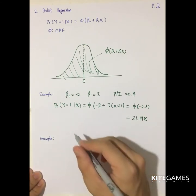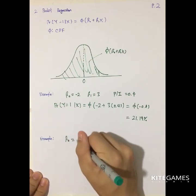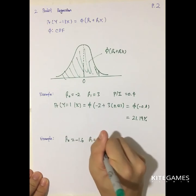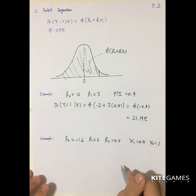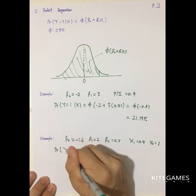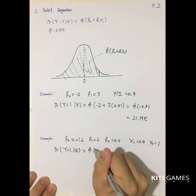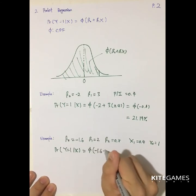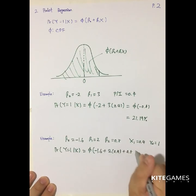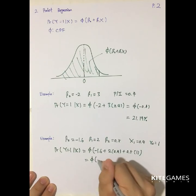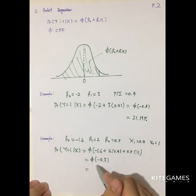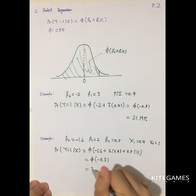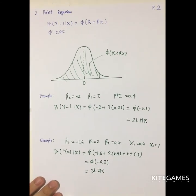Now for a multiple-variable example: if β₀ = −1.6, β₁ = 2, β₂ = 0.5, with x₁ = 0.4 and x₂ = 1, then P(y = 1 | x) = Φ(β₀ + β₁x₁ + β₂x₂) = Φ(−0.3). Looking at the table, Φ(−0.3) = 38.21%. This is how to calculate the probability using the probit model.